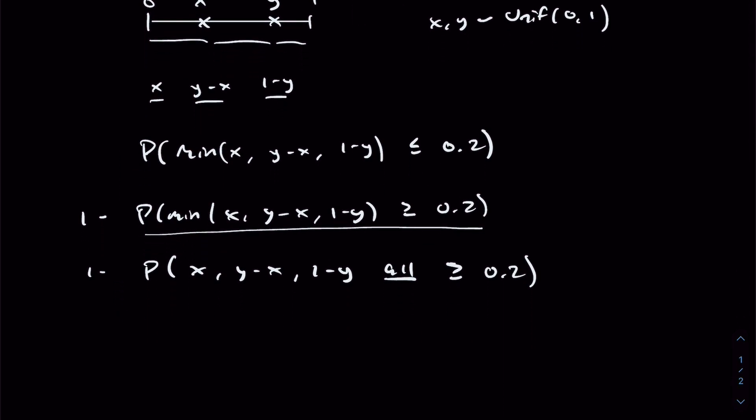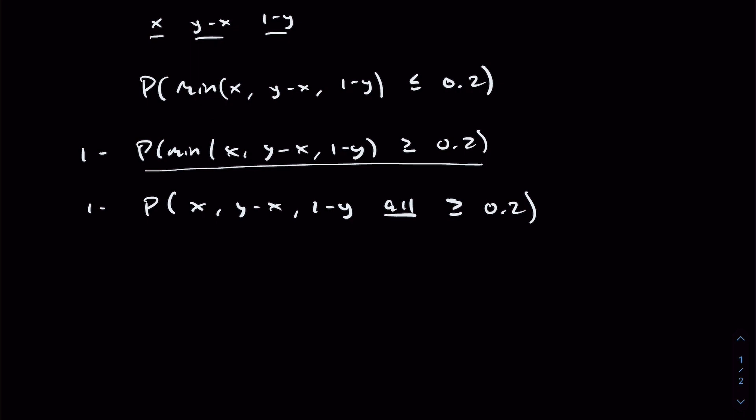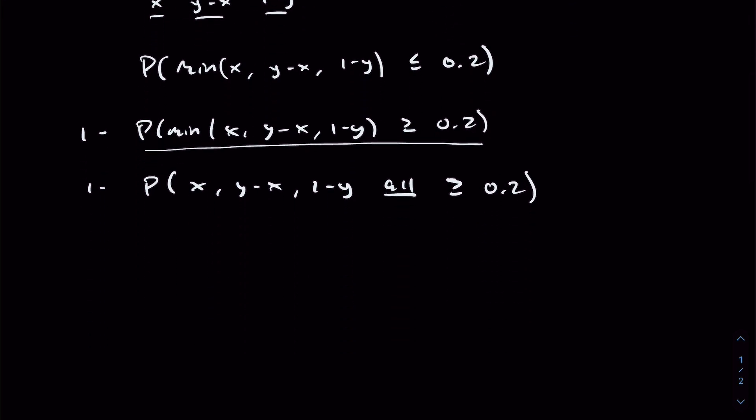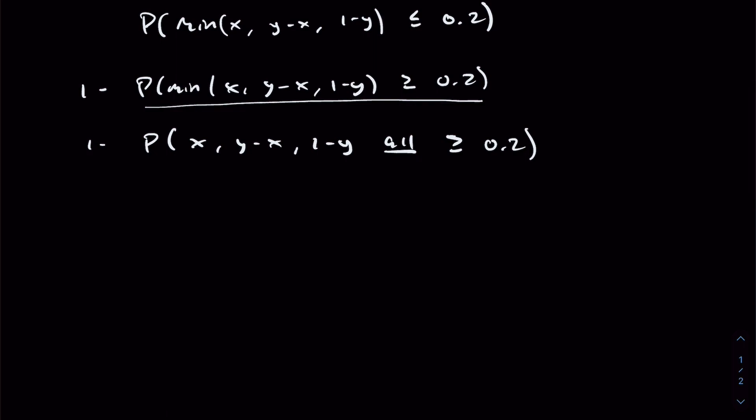So the second key observation or insight to solving this problem would be how you actually approach breaking down the random variables x and y. As we know from above, they follow a uniform distribution. We could use some expression involving convolutions and PDFs to solve these respective expressions, but it can get quite challenging and complicated. Instead, I propose a more visual method.